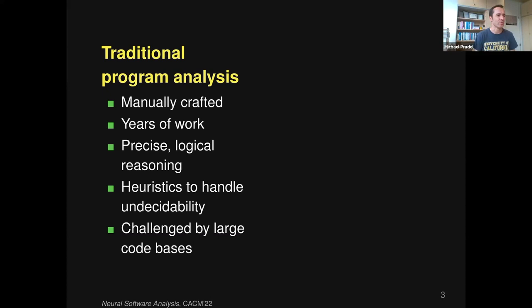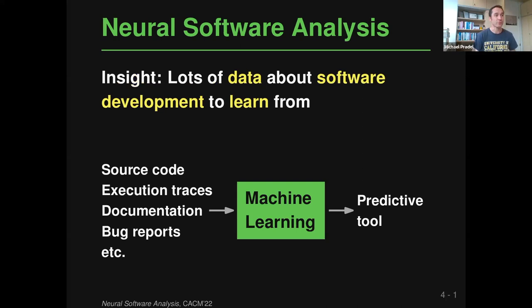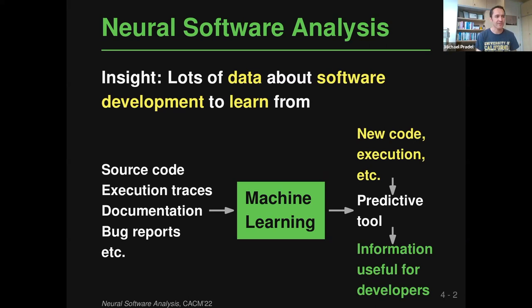This changed a couple of years ago when neural software analysis came along, building on the insight that there's a lot of data about software development we can learn from. Combining this data with recent advances in machine learning gives us predictive tools that look at source code, execution traces, documentation, bug reports, or any other artifact associated with the software. The machine learning component could be a model trained from scratch, fine-tuned from a pre-trained model, or a large language model prompted in few-shot or zero-shot manner.